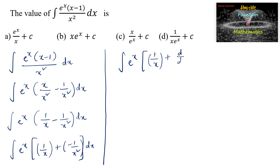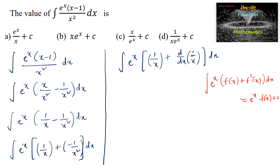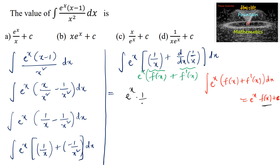We know that the differentiation of 1 upon x is minus 1 upon x squared. We have the property that integral of e^x times [f(x) plus f'(x)] dx equals e^x times f(x) plus c. So here f(x) is 1 upon x and f'(x) is minus 1 upon x squared. Therefore the answer is e^x into f(x), where f(x) is 1 upon x, which gives e^x divided by x plus c.